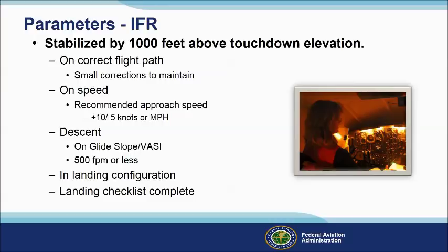If you're not stable by the time you descend to within 1,000 feet of the runway, the answer is simple: go around and set up a more stable approach on the next try. This can be a tough decision, especially if another instrument approach is required. That's why you must be committed to the decision before reaching the 1,000-foot point. If you're stable, continue; if not, go around and set up again.